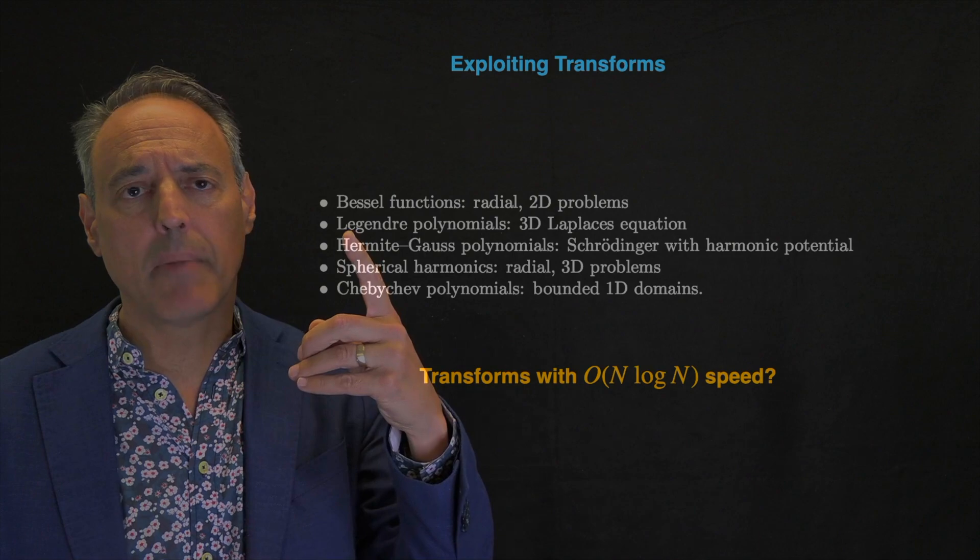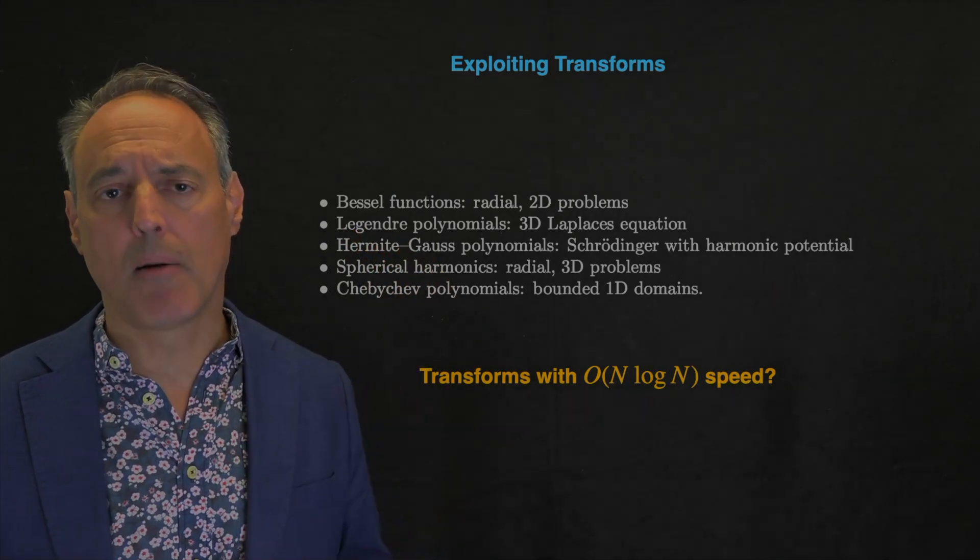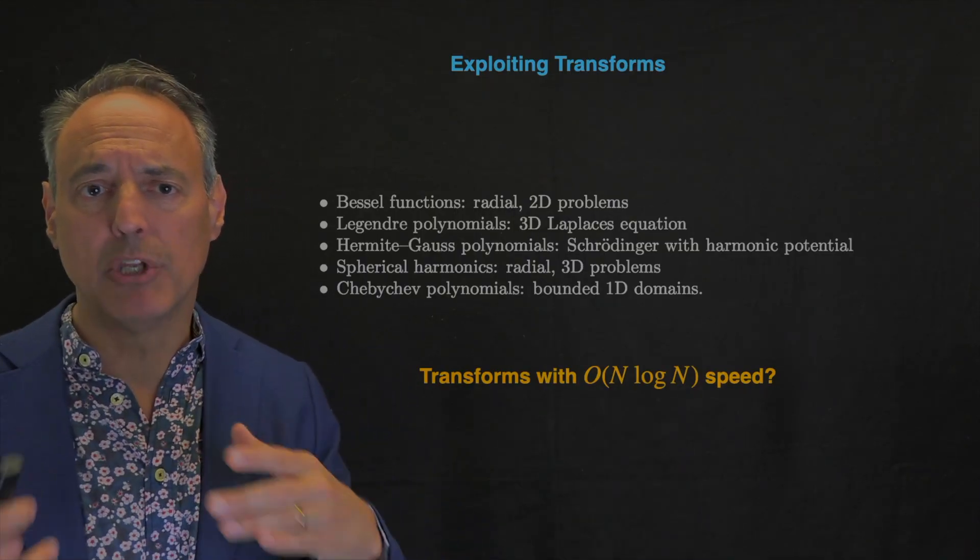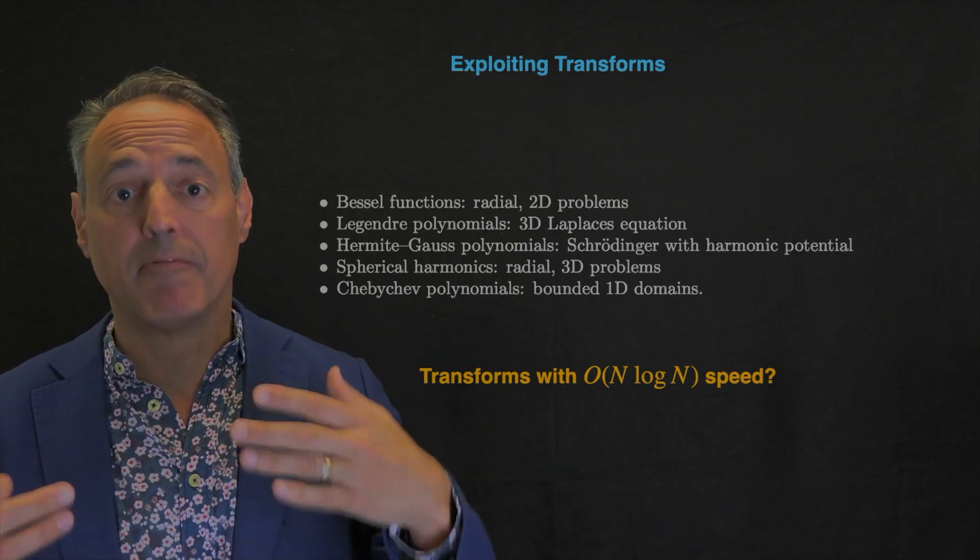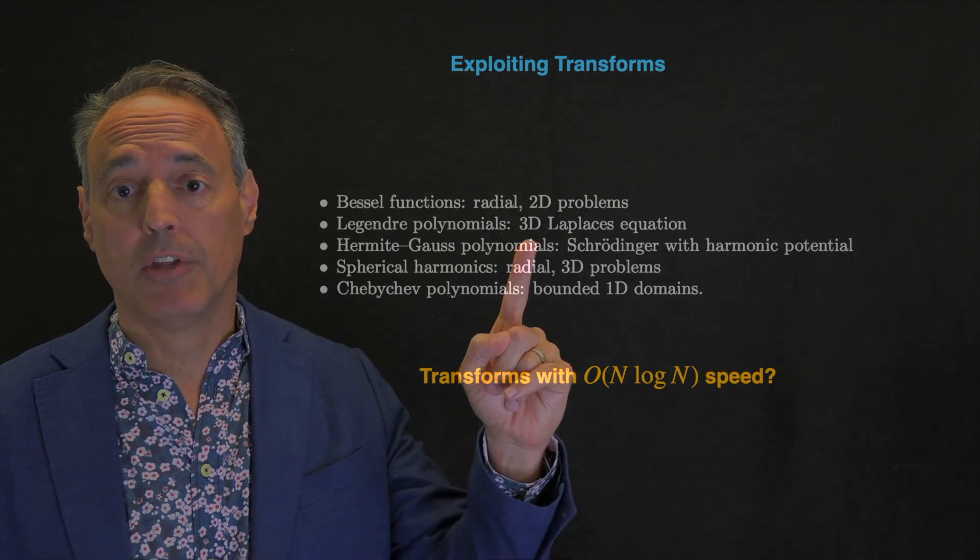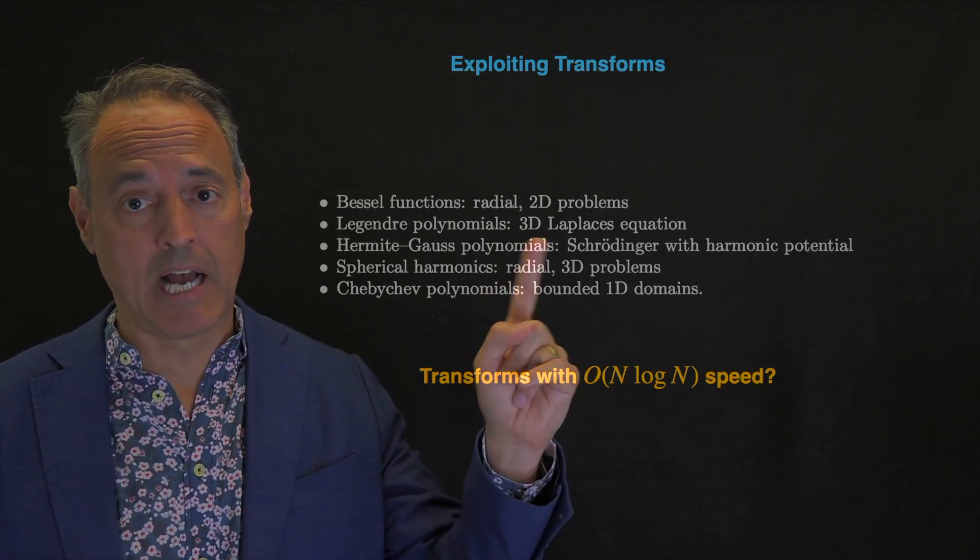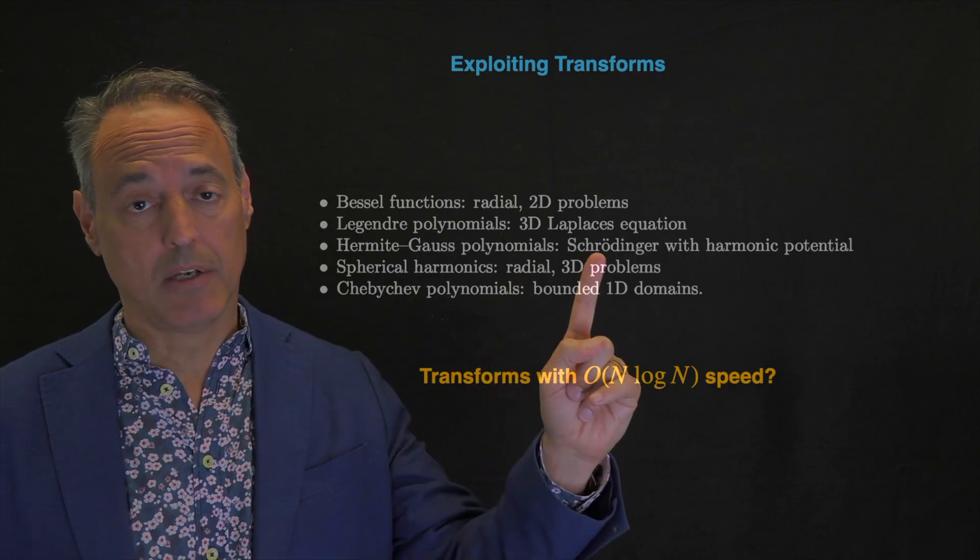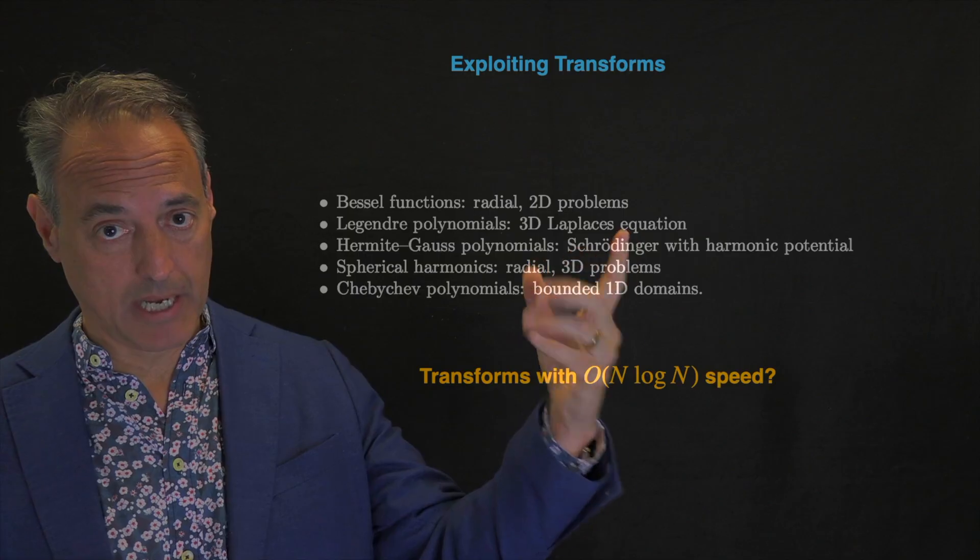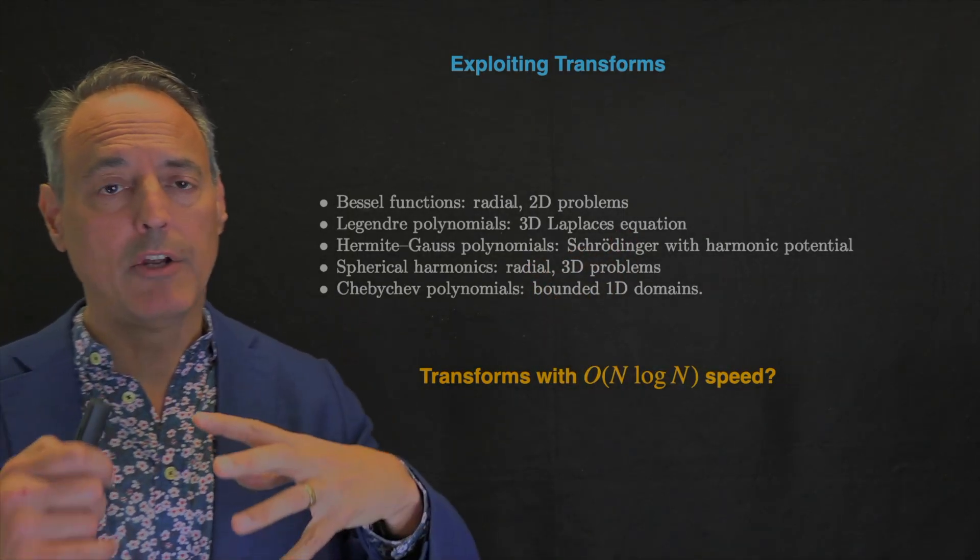For instance, there are transforms tailor-made for specific applications. The Bessel function is great for radial 2D problems, like vibrating drum heads. Legendre polynomials work for 3D Laplace equations. Hermite-Gauss polynomials are the basis expansions for the Schrödinger equation with harmonic potential in quantum mechanics.